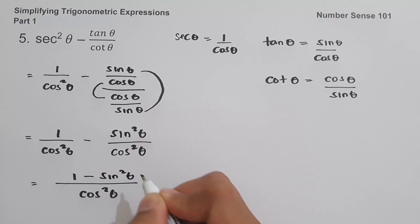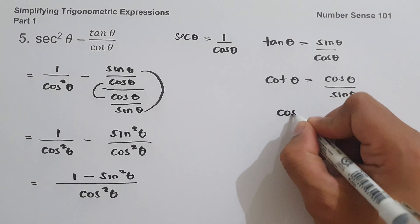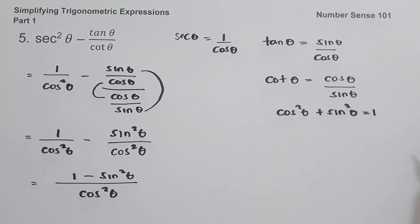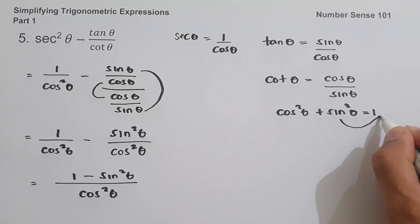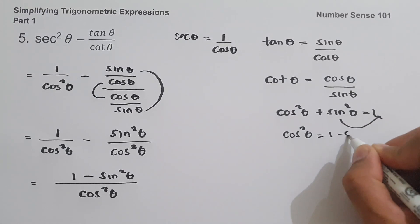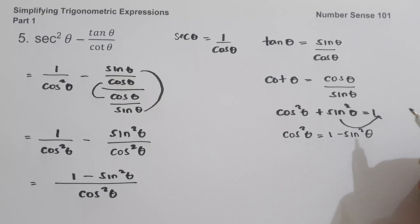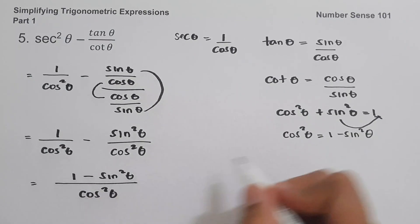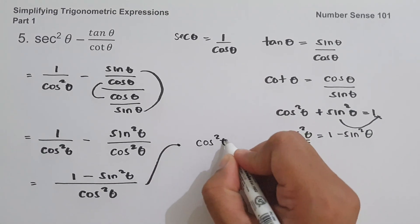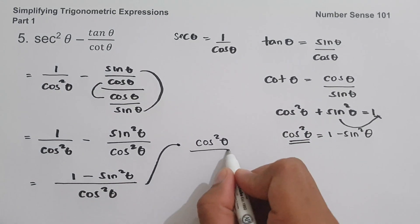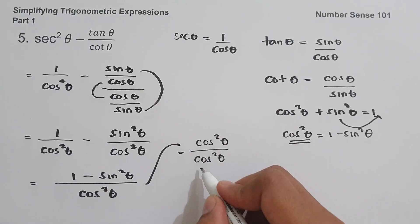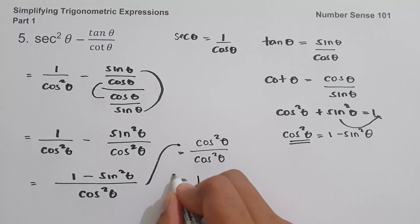Since cos²θ + sin²θ = 1, moving sin²θ gives cos²θ = 1 − sin²θ. So the value of 1 − sin²θ is cos²θ. We rewrite the numerator as cos²θ over cos²θ, which equals 1. That is our answer.